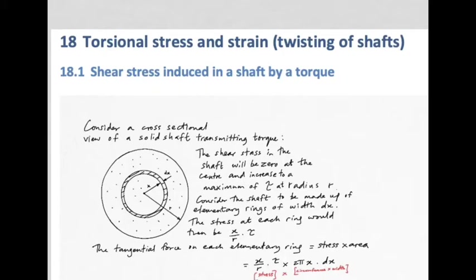If we take a solid shaft and cross-section it, we get a drawing of the circular cross-section. When this shaft is transmitting torque, it experiences maximum stress in its outermost fibers — a shearing effect. Just like grabbing a shaft with two hands, resisting with one and twisting with the other, you apply a torque to that shaft, and the outermost fibers experience the biggest shearing action.